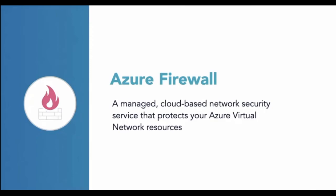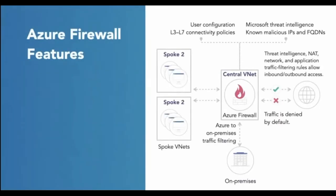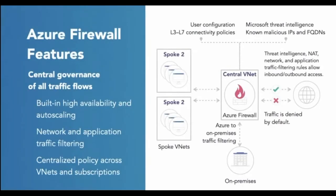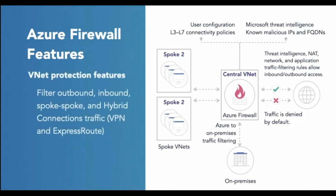Microsoft calls it Stateful Firewall-as-a-Service, and high availability is built-in — meaning no load balancer is required to deal with virtual network appliance failover. Part of the solution is to auto-scale so you don't have to size your infrastructure for peak loads. You can centrally create, enforce, and log all of your application and network connectivity policy across subscriptions and virtual networks.